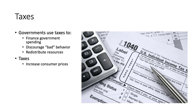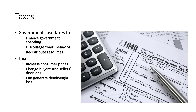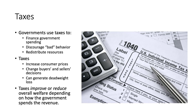Taxes do a couple different things. They increase consumer prices — when the government puts a tax on an item it will increase the price of cigarettes, for example. They also change buyers' and sellers' decisions, and they can generate deadweight loss. Deadweight loss is generally a loss in utility for producers or consumers, and graphically it cuts into producer surplus or consumer surplus. When we assess the burden of a tax we assess which one is cut into further.